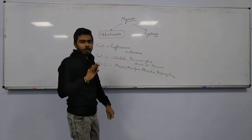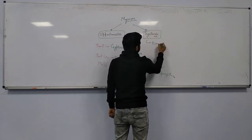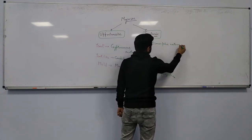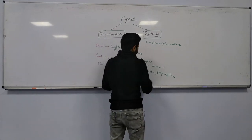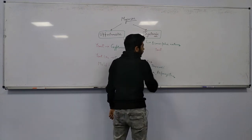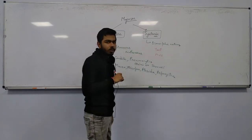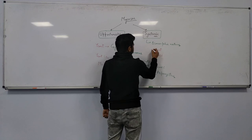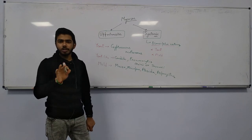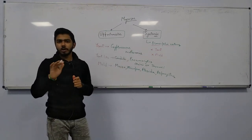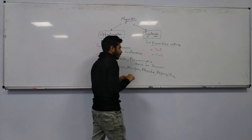Now for systemic mycoses, the fungi have a dimorphic nature. Dimorphic nature means at some temperatures they can act like yeast, and at other temperatures they can act like mold. That is why we call them dimorphic. Dimorphic nature is usually seen in systemic fungi, which will be the topic of discussion in the next class.